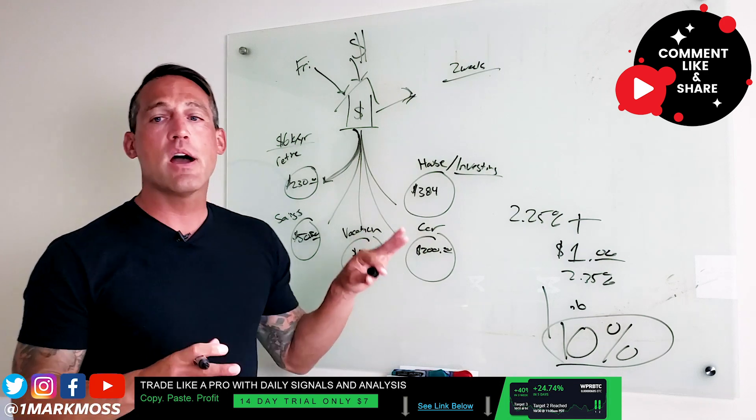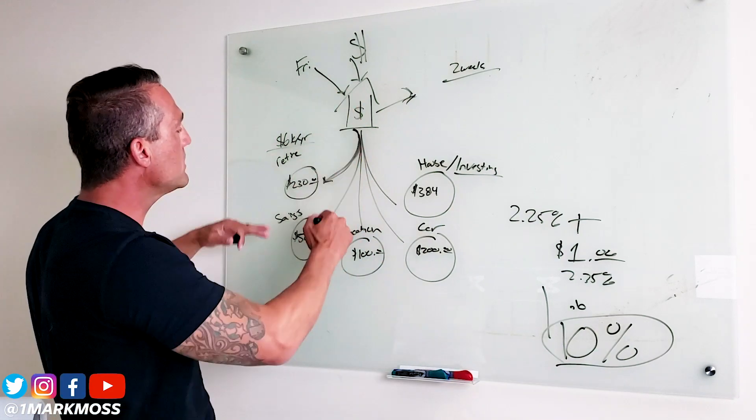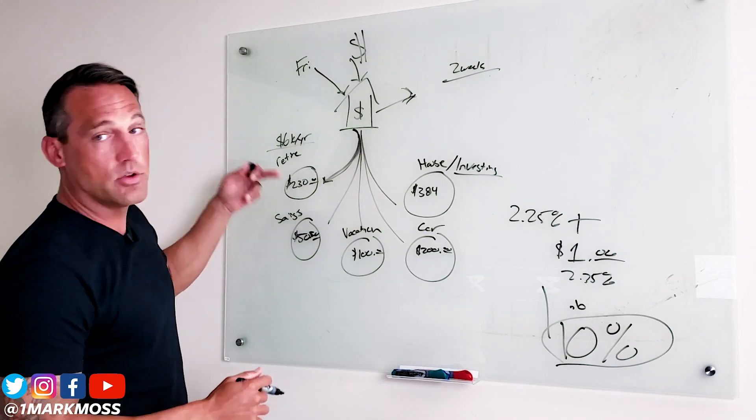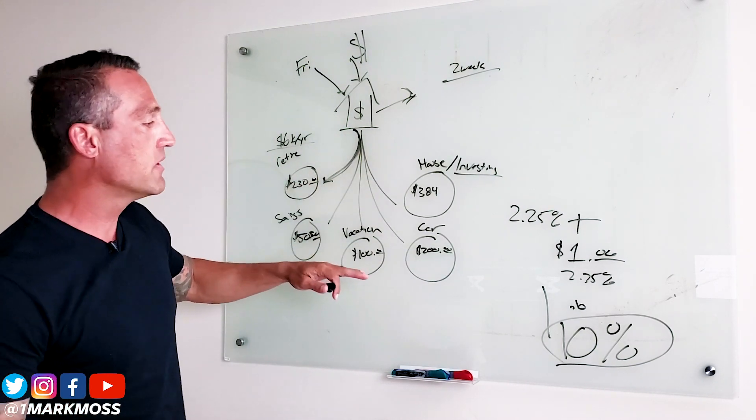All right now here's how this works. So now all this money is going in here and starting to accrue. Every two weeks 230, 230, 230, 50, 50 and so on. And it's growing at 2.25%.